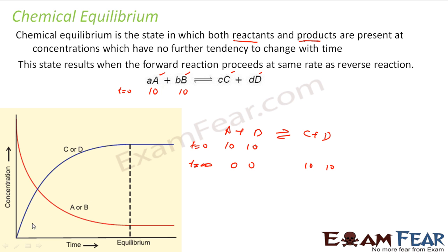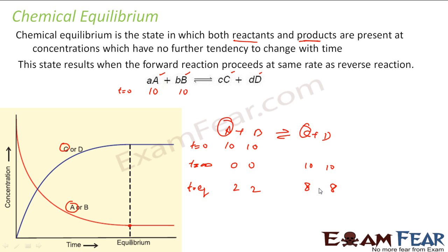What we observe is that starting with only A and C on a concentration-time graph: the concentration of A decreased over time but didn't become zero — it stopped after some time. Similarly, the concentration of C increased. At equilibrium, chemists found values like A=2, C=8, or perhaps 3 and 7 — the concentrations stabilize at some intermediate values.